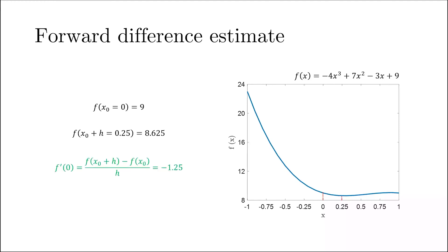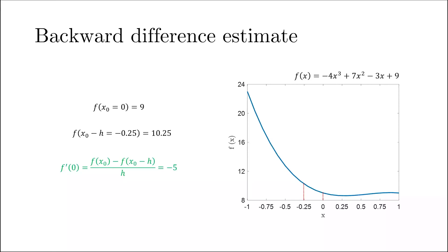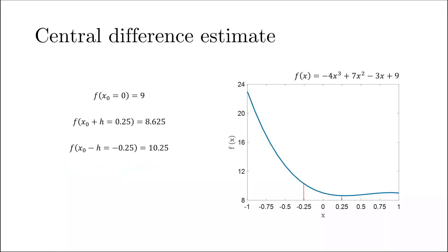Using the forward differencing estimate, we need f(x₀) = f(0) = 9, and f(x₀ + h) = f(0.25) = 8.625. Putting the numbers together, the first order derivative at x = 0 is -1.25. Using the backward differencing estimate, we use f(x₀ - h) = f(-0.25) = 10.25, giving the first order derivative as -5. From the picture we can see that the derivative is expected to be negative, but the two schemes give quite different estimates.